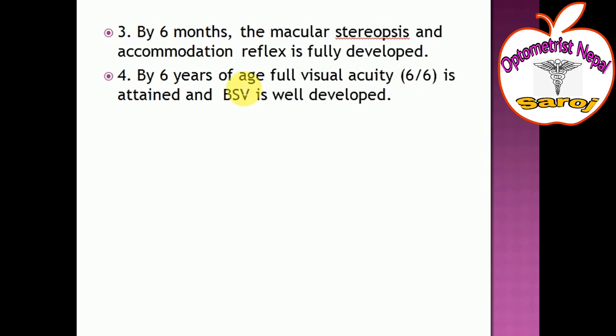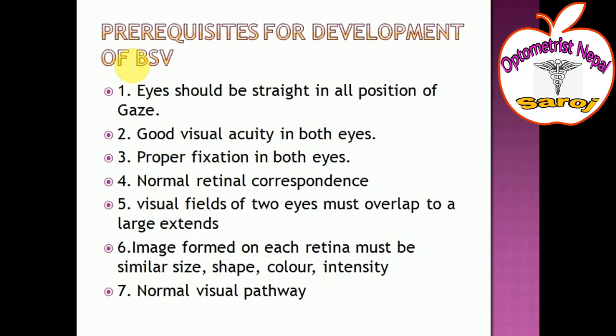By six years of age, full visual acuity of 6/6 — normal visual acuity — is attained. After six to seven years of age, visual acuity is normal at 6/6 with full binocular single vision development completed.